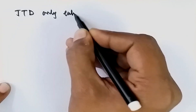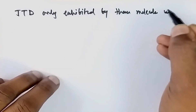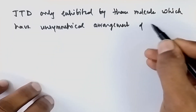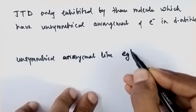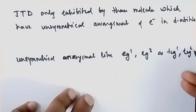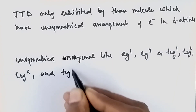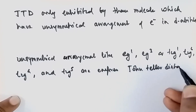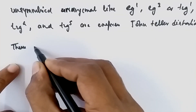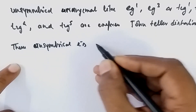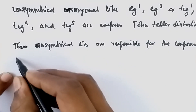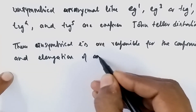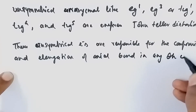Jahn-Teller distortion is exhibited only by molecules with an unsymmetrical arrangement of electrons in the d orbitals. Unsymmetrical arrangements such as eg¹, eg³, or t2g¹, t2g², t2g⁴, and t2g⁵ express Jahn-Teller distortion. These unsymmetrical electrons are responsible for the compression and elongation of the axial bond in any octahedral complex.